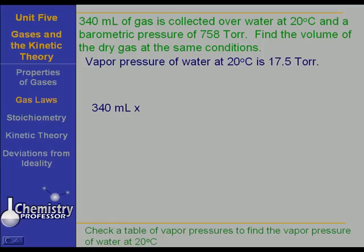If I subtract the pressure of the water from that, that means that the pressure of the gas is less than 758. So here's the expression for the pressure of the gas. It's 758 minus 17.5 torr, and we put that over 758 torr.